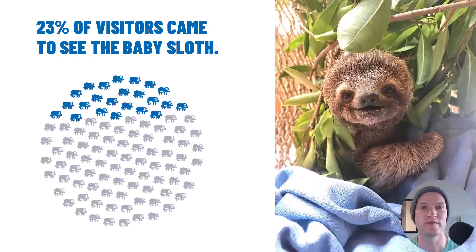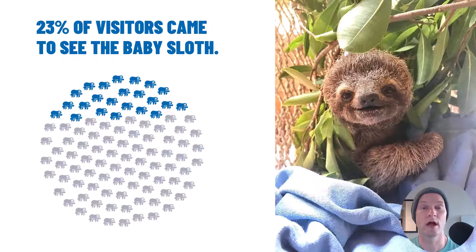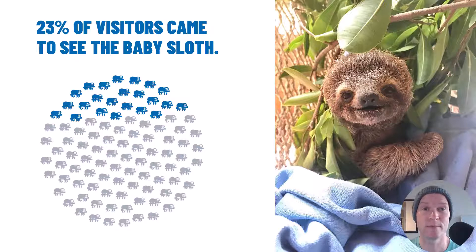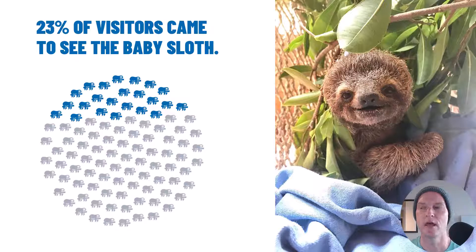This comes from visitor studies data. If you work for places like museums, zoos, or aquariums, sometimes if you have a baby animal, people want to know how many visitors came just to see a specific animal, especially a baby sloth. I'm going to use this plum pudding chart to represent the percentage of visitors who said they came to the zoo specifically to see the baby sloth. I have a beautiful picture of a baby sloth named Elsa from the Sloth Institute. The blue represents the 23% and the gray represents the rest of the visitors.